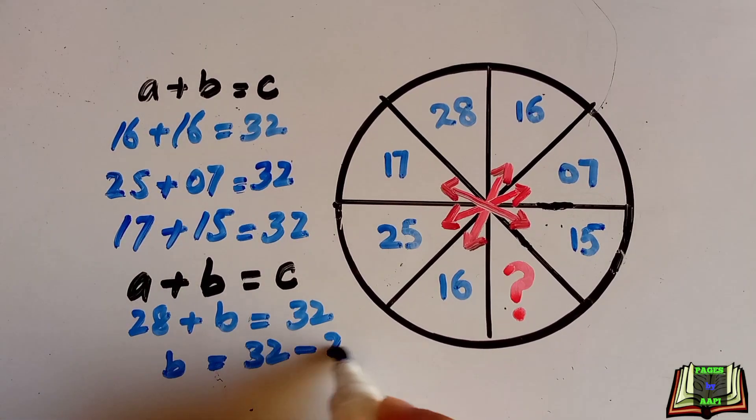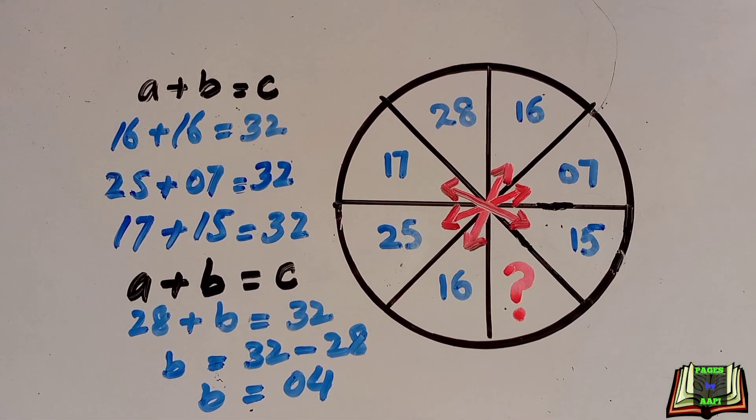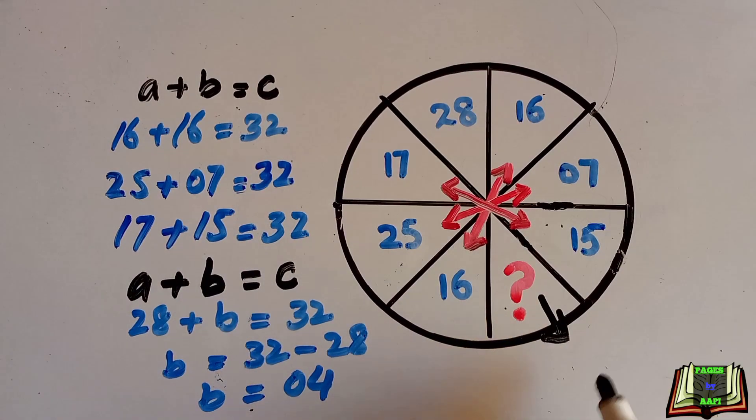B is equal to 4. We got the answer. It means if we add 28 and 4, then it is the combination of 32. Means 4 is the unknown number here in this wheel puzzle.